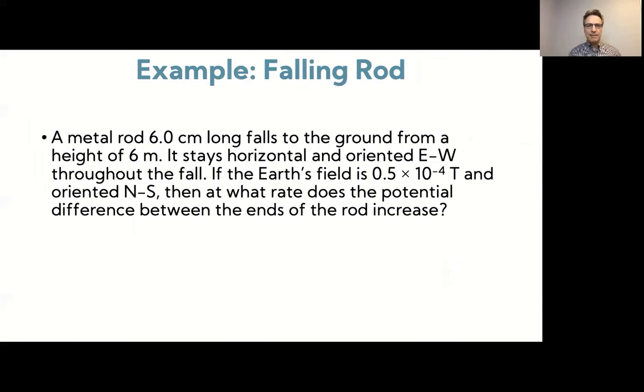Here's another example. A metal rod 6 centimeter long falls to the ground from a height of 6 meters. It stays horizontal and oriented east-west throughout the fall. If the Earth's field is again half a gauss and oriented north-south, then at what rate does the potential difference between the ends of the rod increase?